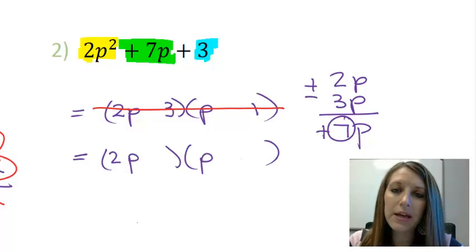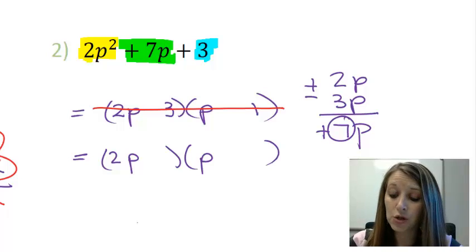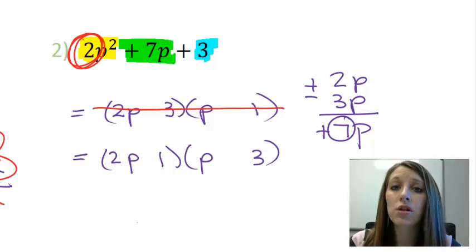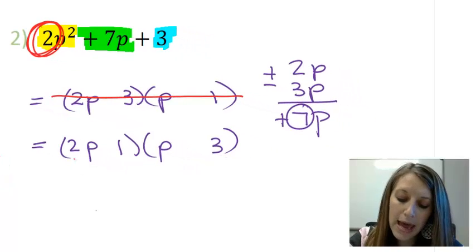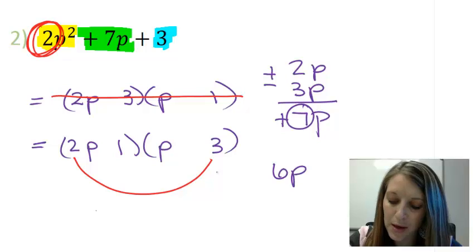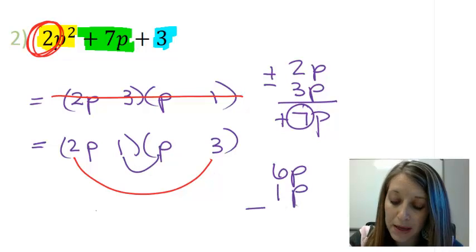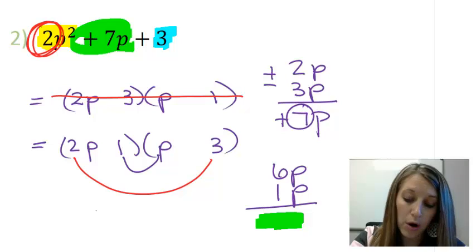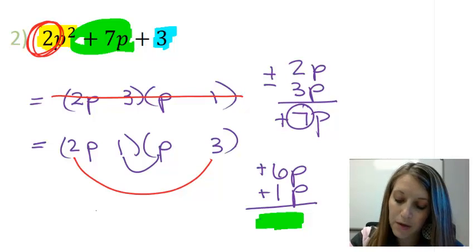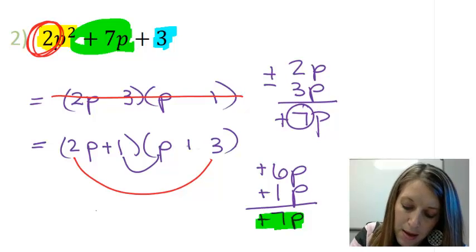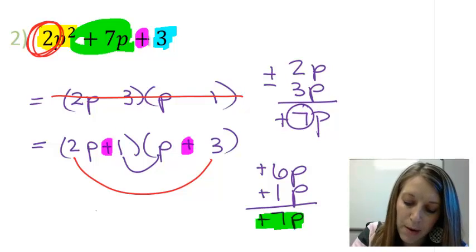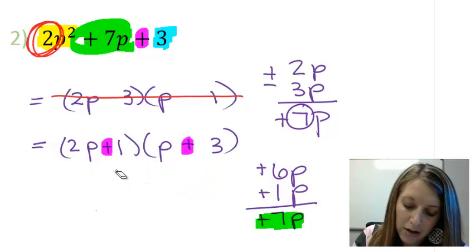So let me set up these parentheses again. I am going to keep my 2p times p the same, but let me rearrange the other two numbers. And that is why it becomes much more complicated when you have this number in front. Because you have to do the multiplication by that number rather than just adding and subtracting them. So again, my outside gives me a 6p. My inside gives me a 1p. And I am looking to come up with this positive 7p here. And I can make that work if both of these are positive. So I go back up here and I make both of these answers positive. Double check my last sign. Positive times positive does give me positive. So this gives me my final answer here.